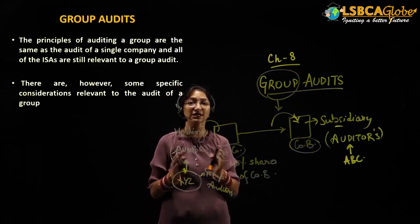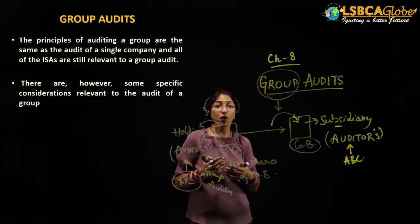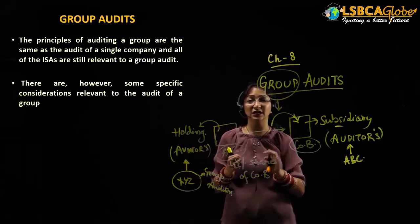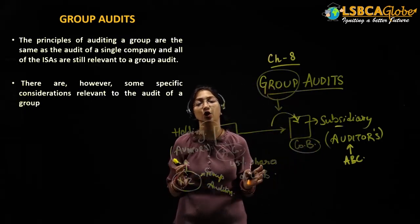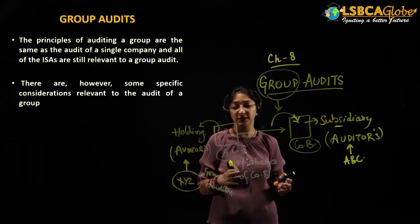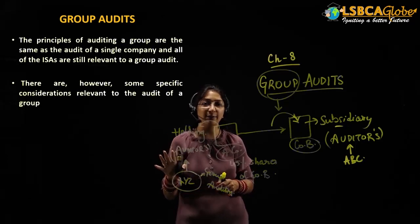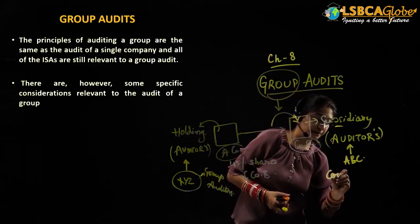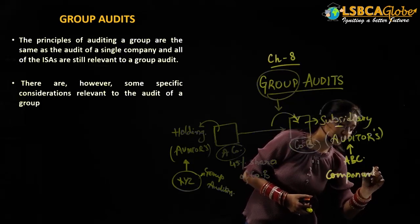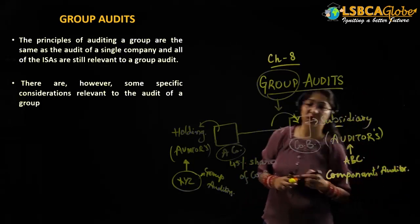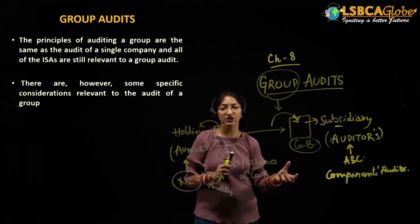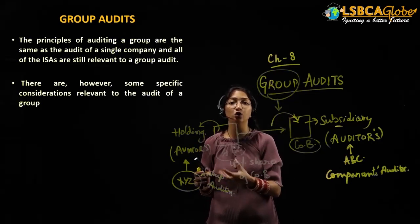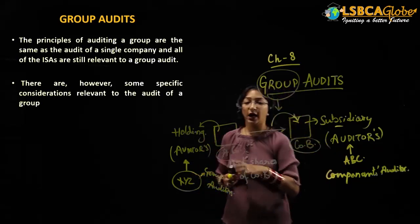So in this chapter, we are going to discuss the group auditors — their responsibilities and everything about group auditors. To summarize: it is not mandatory that the holding company auditor and the subsidiary company auditor should be the same. The person auditing the books of the holding company will be known as the group auditor, and the person auditing the books of the subsidiary company will be known as the component auditor.